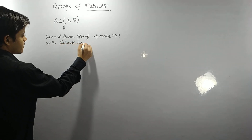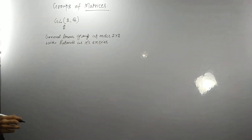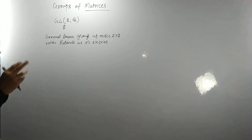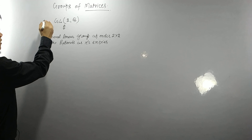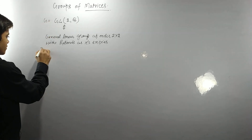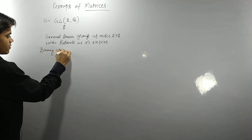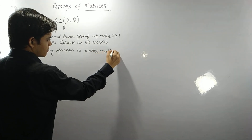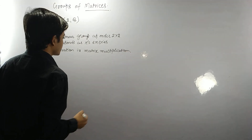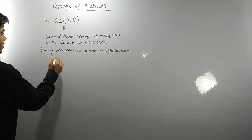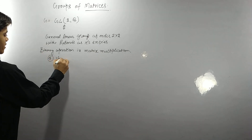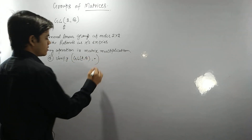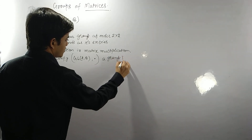GL(2,Q) means two by two matrices — two rows and two columns — with rational number entries. This is our non-empty set, and the binary operation is matrix multiplication. The question is: verify that GL(2,Q) with respect to multiplication is an algebraic structure, specifically a group.